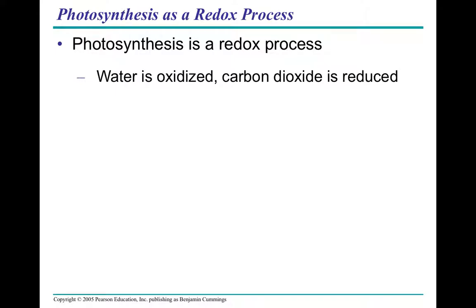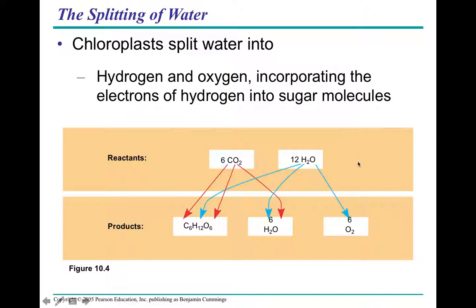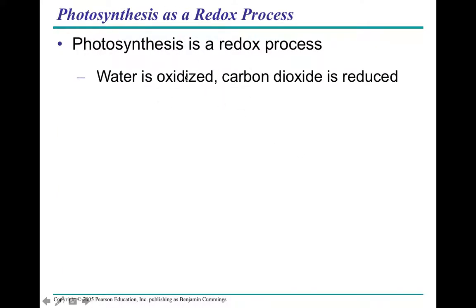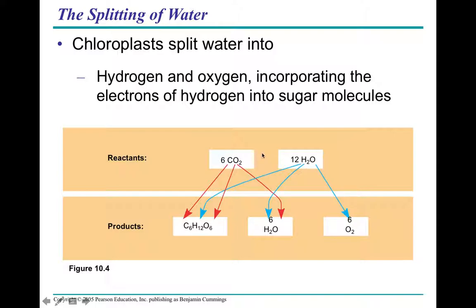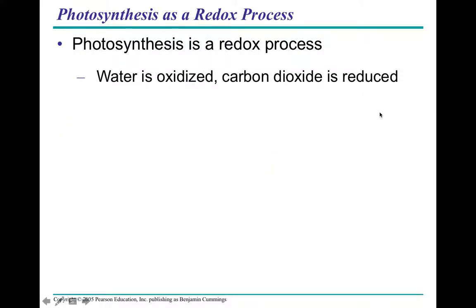Photosynthesis is a redox reaction, meaning it has both reduction and oxidation. One way to remember it: 'LEO says GER' — if you Lose Electrons you are Oxidized; if you Gain Electrons you are Reduced. In this situation, water loses electrons and becomes oxidized, and carbon dioxide gains electrons and becomes reduced.